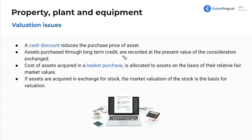Assets purchased through long-term credit are recorded at the present value of the consideration exchanged. So if you buy through long-term credit, like you issue a bond to buy this, you're going to have to use present value factors to determine the value of that over time, which is going to be less than the actual purchase price now. And that's a whole thing for bonds — if you haven't seen bonds yet, definitely go check out that wonderful section.